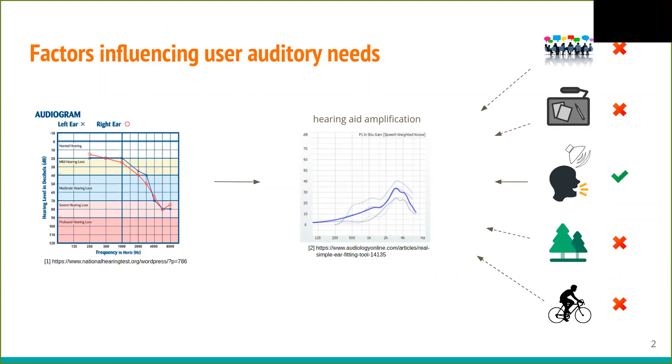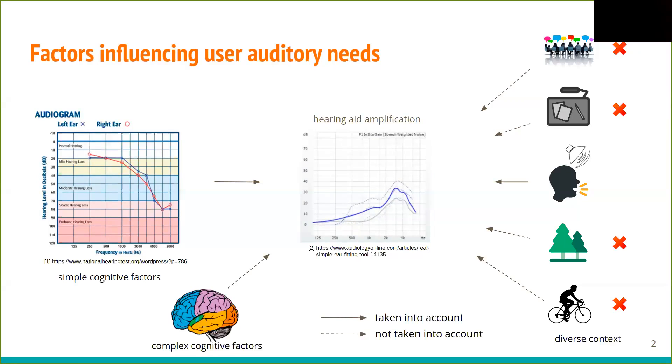Diversity of context is not really taken into account and typically only a single setting is offered to users. Moreover, the different needs arise not only from different situations, but also from differences in cognition between users. Two users with identical audiograms can have vastly different perception of sounds due to some more complex cognitive factors that are not measured because of technical or practical limitations.